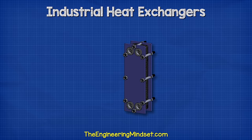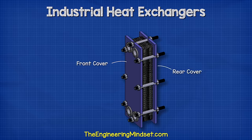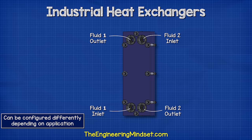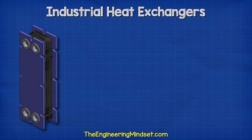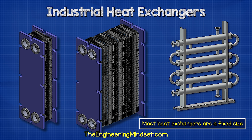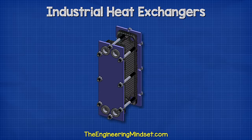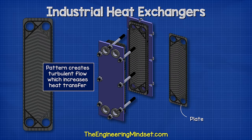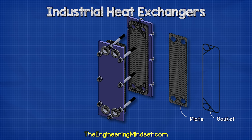Industrial plate heat exchangers look something like this. They consist of a thick metal cover on the front and rear of the unit, typically made from mild steel, with two inlets and two outlets, normally flange connections. In most designs, all four ports are located on the front plate, which allows the heat exchanger to be easily extended or reduced to accommodate future changes in operation — most heat exchangers do not have this ability. Between the end covers we find a number of plates, which are thin sheets of metal with a pattern stamped into them. These patterns help direct the fluids and create very turbulent flow, which increases heat transfer. Between each plate is a seal known as a gasket, typically made from rubber.